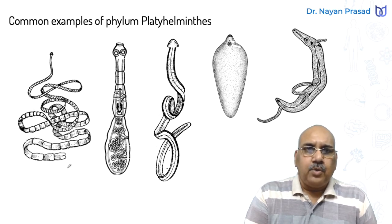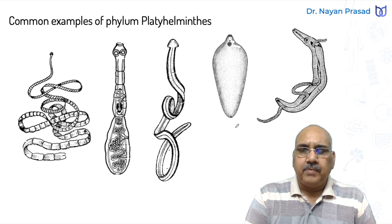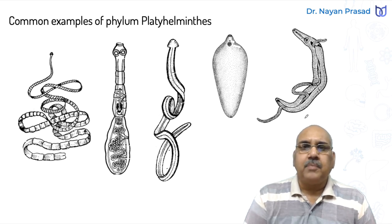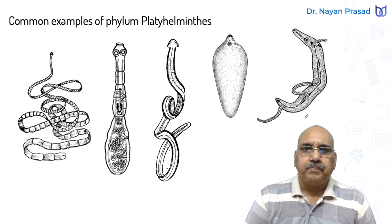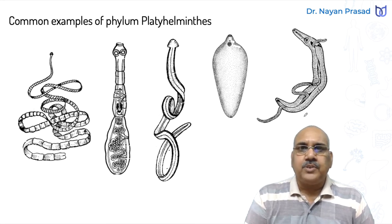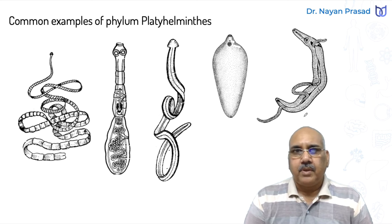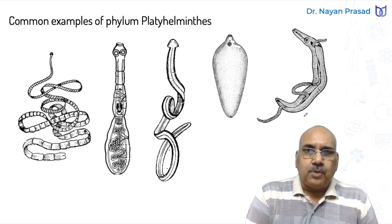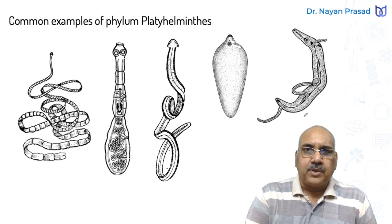You must remember Platyhelminthes includes flatworms. Common examples of phylum Platyhelminthes include tapeworm, Bipallium, liver fluke, and Schistosoma - the blood fluke. Most of the members are hermaphrodite; however, Schistosoma is unisexual.